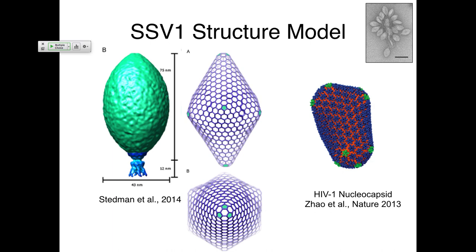Sulfolobus has a cross-linked glycoprotein outside layer called the S-layer, which is hexagonal. So hexagonal six-fold symmetry should sound really familiar — we think the tail structure is associating with the S-layer in terms of being able to infect the cells. We have no direct evidence for this, all of it's circumstantial, but you've got six-fold symmetry here and six-fold symmetry on your host. And the main body of the virion doesn't look like an icosahedron or helical symmetry.